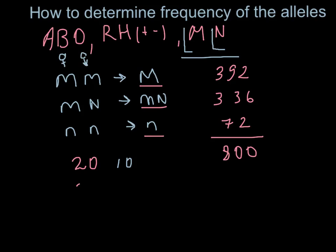We just take, for example, 20 red ribbons and divide them by the combined total, 20 plus 10.